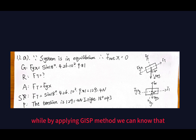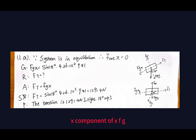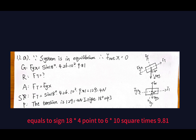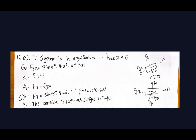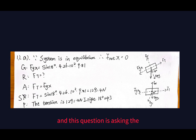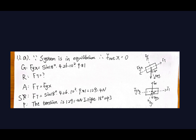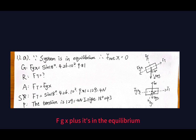By applying the GISP method, we can determine that fgx1 — the x-component of the gravitational force on mass 1 — equals sine 18 degrees times 4.26 times 10 squared times 9.81, since it equals the horizontal component times the mass times gravitational acceleration. This question is asking for the tension force.